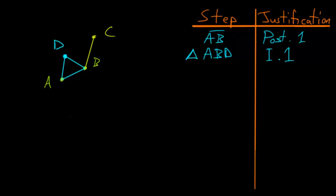Postulate 2 says to produce a finite straight line continuously in a straight line. We can use this to take DB and DA and extend them as far as we wish. We will extend it to some point which we can call E, and we'll extend this one to some point which we will call F.